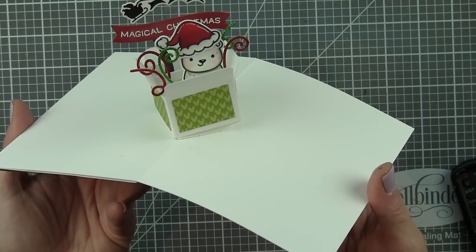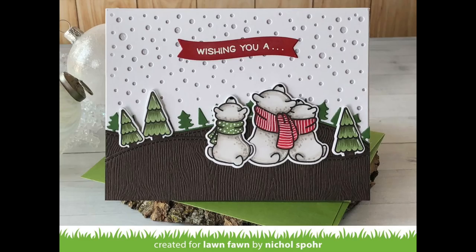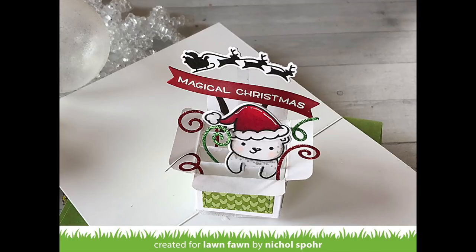Thank you guys so much for joining me today for this mini pop-up box card featuring new Lawn Fawn stamps and dies and cardstock from the Fall and Winter 2018 release. The supplies I used to create this card are listed and linked below the video here on YouTube. Here are a couple more cards featuring Lawn Fawn stamps and dies that you might be interested in. Thank you guys for joining me today and we will see you next time.